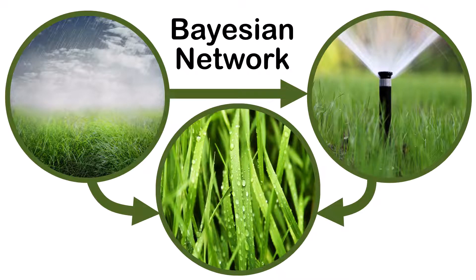Suppose that there are two events that could cause a garden's grass to be wet: either the sprinkler is on or it's raining. When it rains, the sprinkler is not usually turned on. Let's model this situation with a Bayesian network.